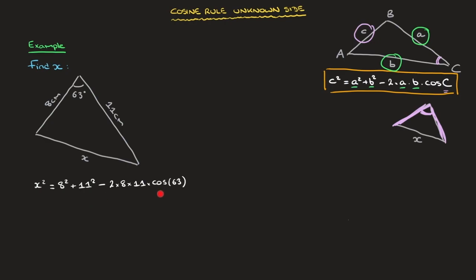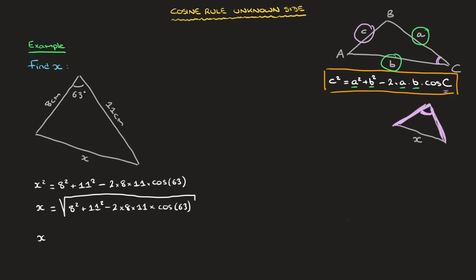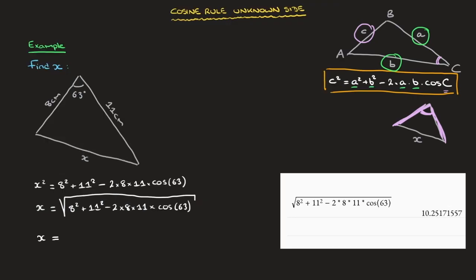Now that we have the value of x squared, to find x we need to calculate the square root of all of that. In other words, x is equal to the square root of eight squared plus eleven squared minus two times eight times eleven times cosine of 63. Plugging this carefully into our calculator, I find that x is equal to 10.3 centimeters, rounded to three significant figures.